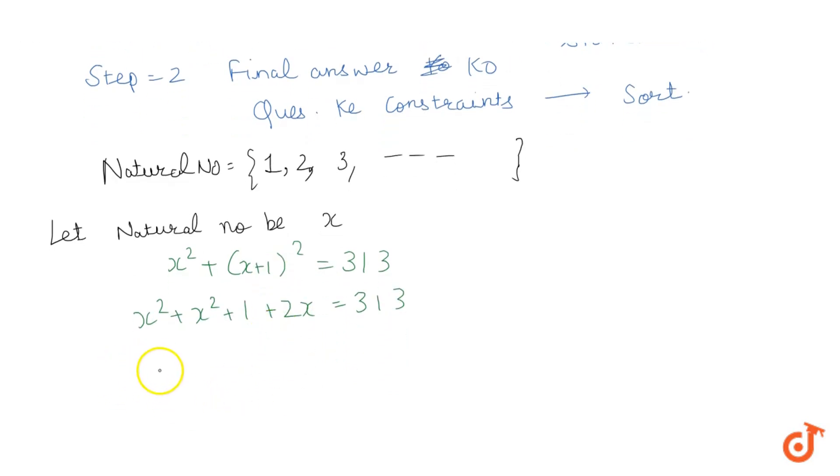This tells me my equation reduces to 2x² + 2x - 312 = 0, or x² + x - 156 = 0. So this is my quadratic equation which I need to solve.